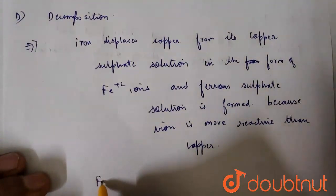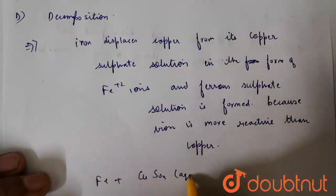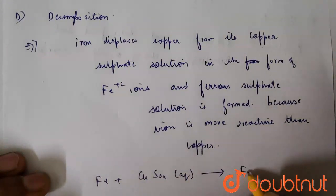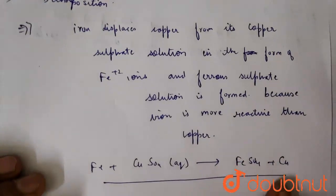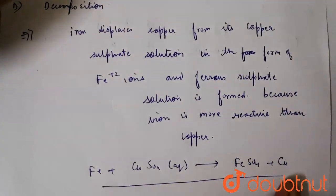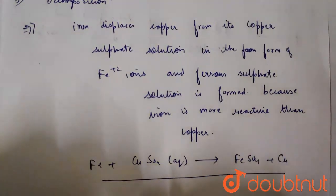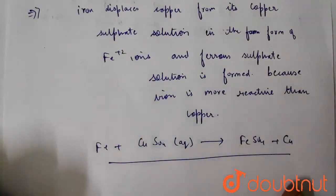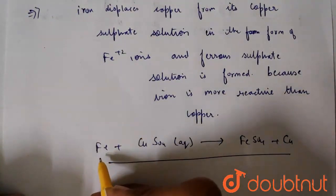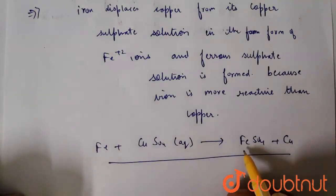So if I write the reaction in simple terms, Fe + CuSO4 will give us FeSO4 + Cu. And copper is coated on the iron nail in brown color. So Fe initially solid is converted into FeSO4.